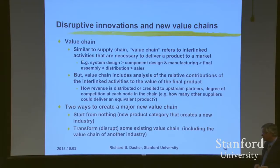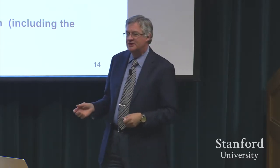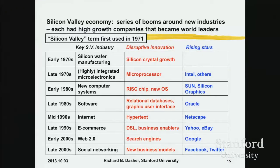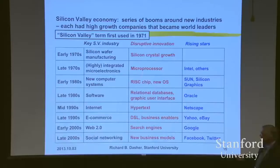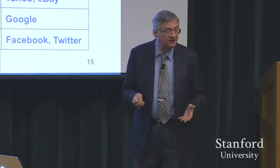There are really two ways to create a major new value chain: you can start from nothing and create a new industry, or you can transform some existing value chain — including the value chain of another industry. In the history of Silicon Valley, we've seen a number of new industry value chains. The whole history of the Valley looks like a series of big waves where some sort of innovation generates a new industry, and every industry that grew had some rising star coming out of Silicon Valley that became a world leader.